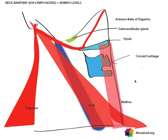Welcome to another Mosaic.org tutorial. Mosaic is the platform for med students to learn medicine. Today we're going to be talking about lymph nodes in the neck, and we're going to specifically focus on the Robbins levels. The Robbins level system is a way that head and neck surgeons and ENT surgeons classify lymph nodes in the neck, and they use it to describe the type of cervical lymph node dissection that they'll perform in head and neck malignancies.